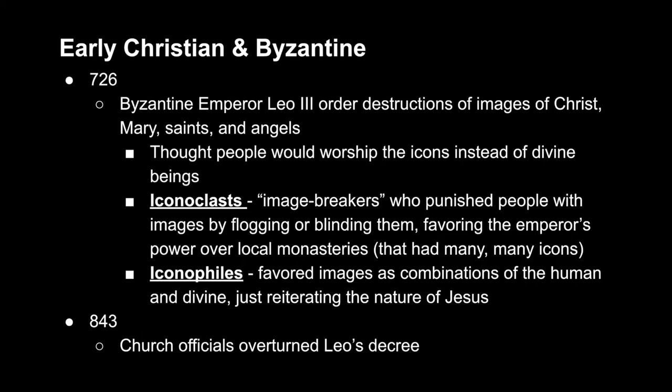Moving on to 726, Byzantine emperor Leo III ordered the destruction of images of Christ, Mary, saints, and angels. He thought people would worship the icons instead of the divine beings themselves, which was prohibited by the Bible. As a result, iconoclasts — or image breakers — would punish people who had these images by flogging or even blinding them. These people also favored the emperor's power over local monasteries that themselves had many depictions of Christ, making those monasteries iconophiles.